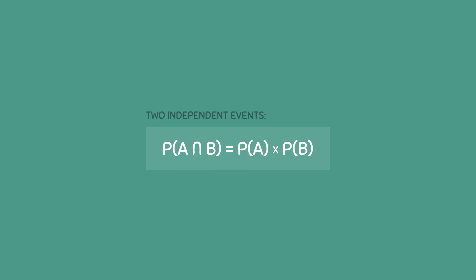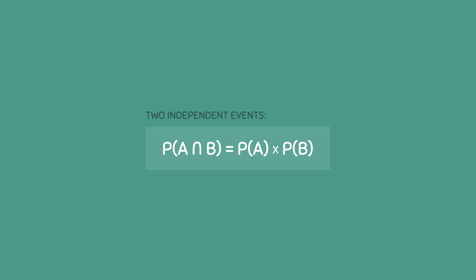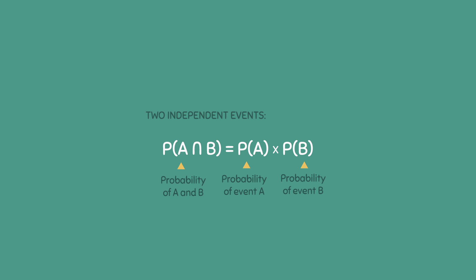The probability of getting heads is 0.5 and it stays that way regardless of what you roll. To calculate the probability of two independent events happening together, you can use this formula, where the probability of A and B is equal to the probability of event A times the probability of event B.